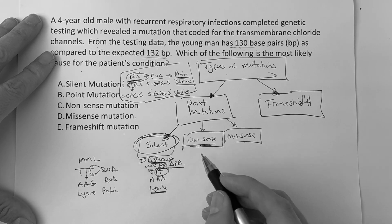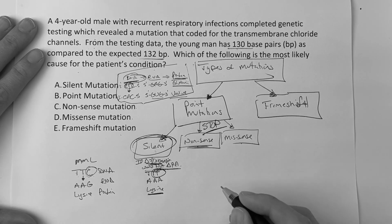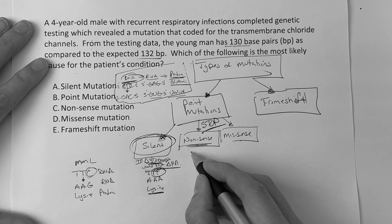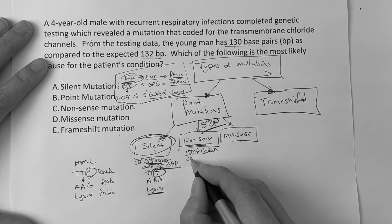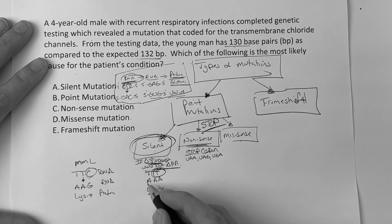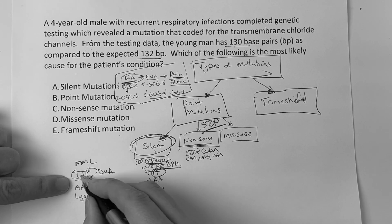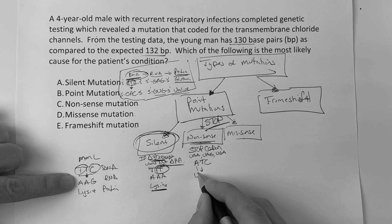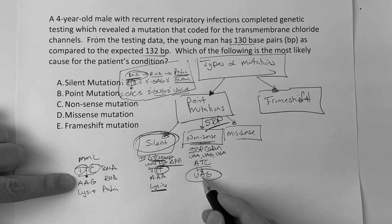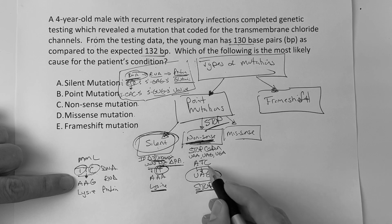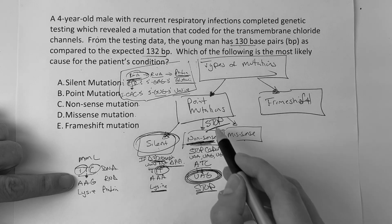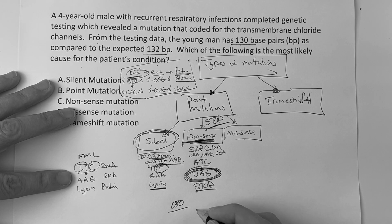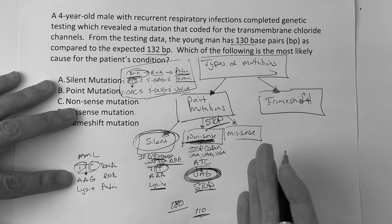When it comes to nonsense mutations — stop the nonsense — because a nonsense mutation results in an early stop codon. The stop codons are UAA, UAG, and UGA. For example, if normal is TTC and the first T is changed to an A, giving ATC, that goes down to UAG, which is a stop codon. You'll see questions where normally someone should have 180 base pairs but this person only has 110 — there must have been an early stop codon.